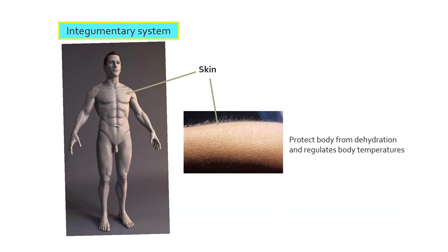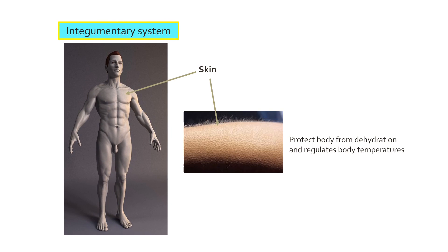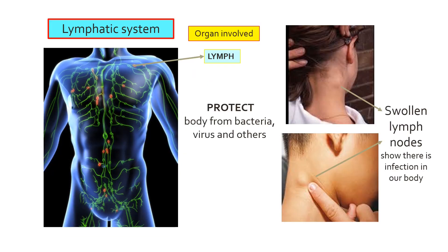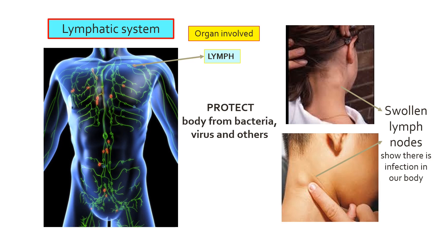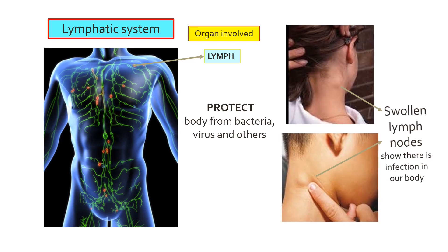Integumentary system: organ involved is the skin. Our skin protects the body from dehydration and regulates body temperature. Lymphatic system: organ involved is the spleen. It protects the body from bacteria, viruses, and others. Swollen lymph nodes mean there is an infection in our body.